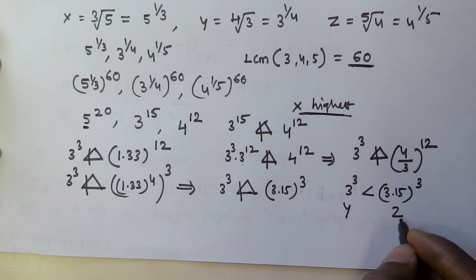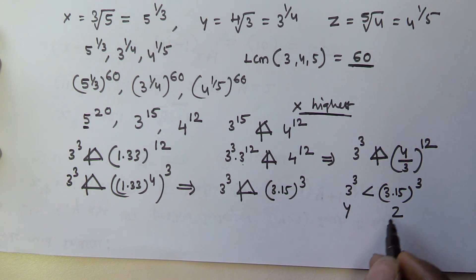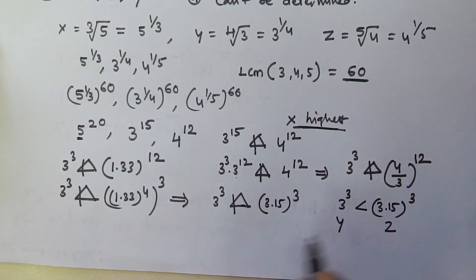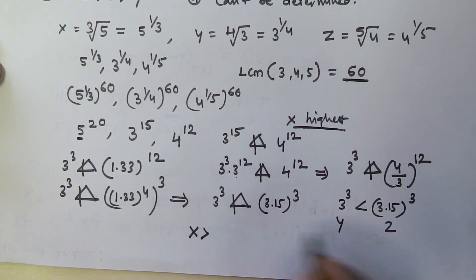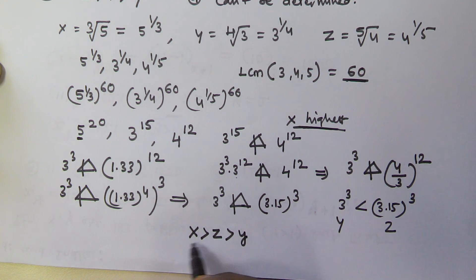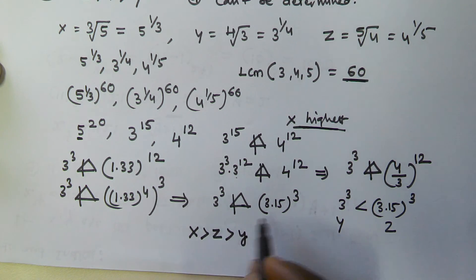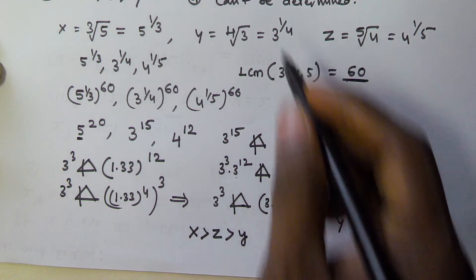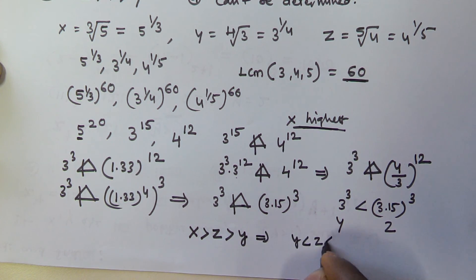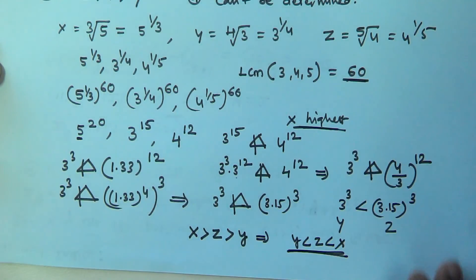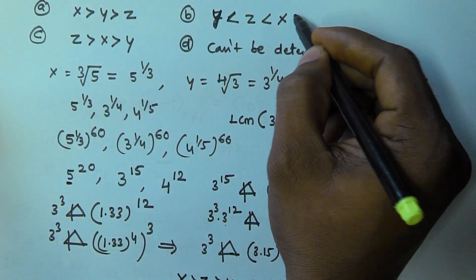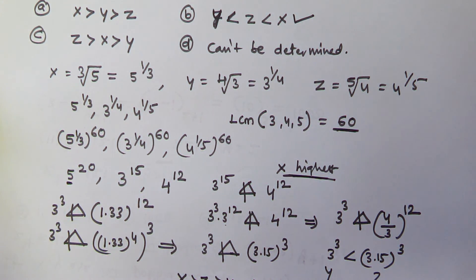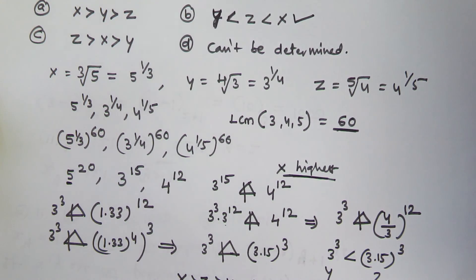So from this it is clear that z is greater than y, and x is greater than both. The relationship is x > z > y, which is the same as y < z < x. This matches option B. So the correct relationship between x, y, and z is y < z < x, which is option B. I hope you learned this — thank you very much for watching this video, please subscribe.